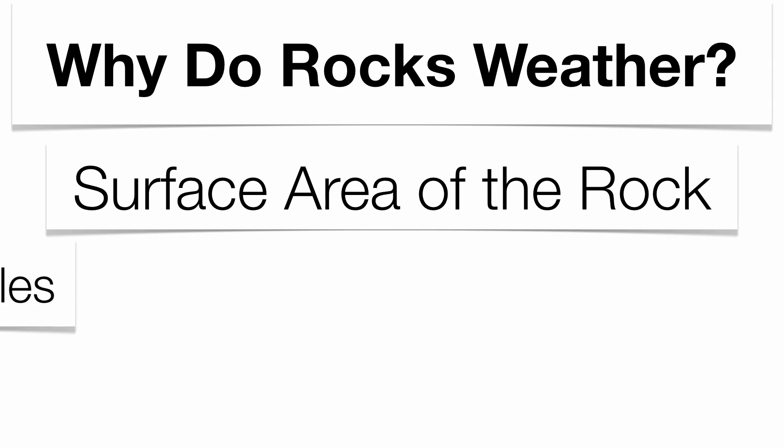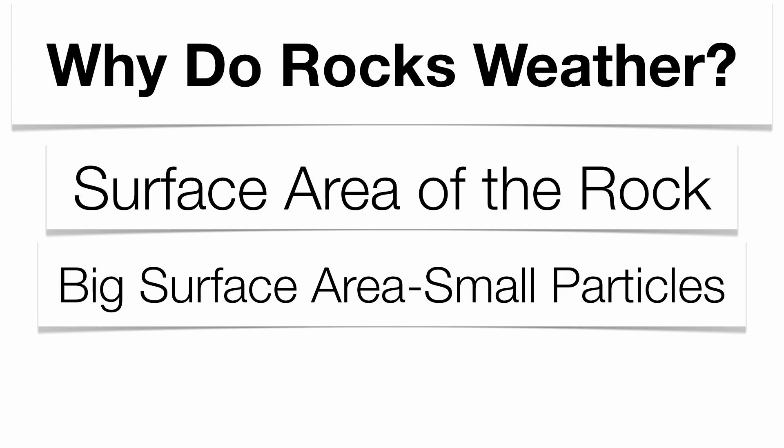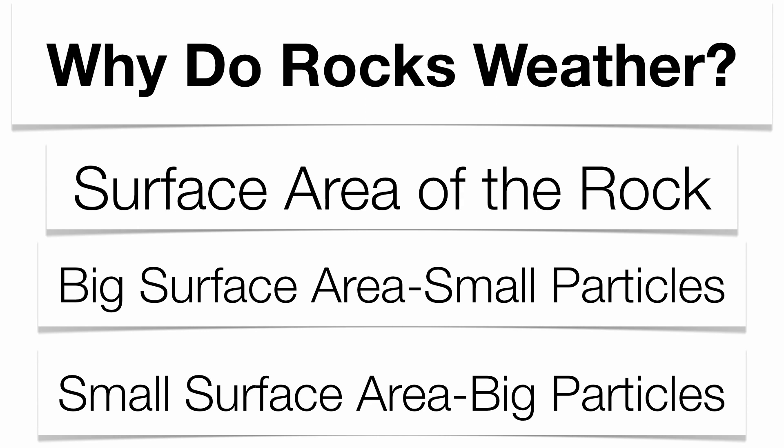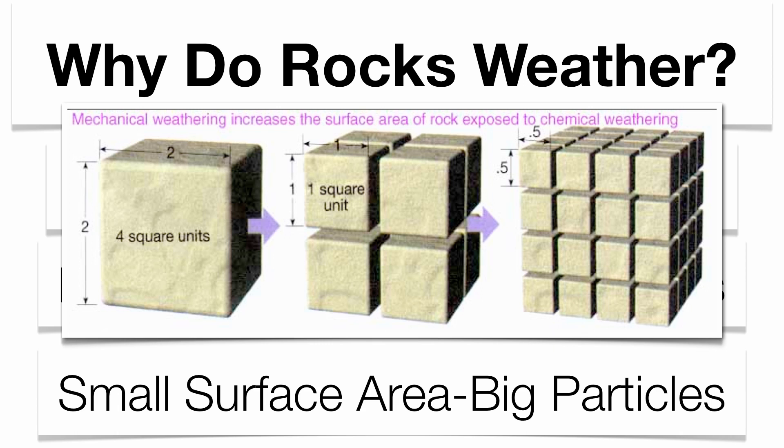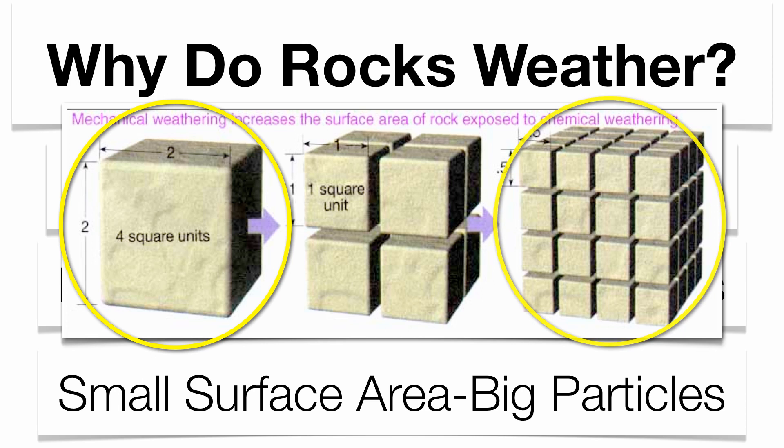The reason why rocks go through weathering is all about the surface area of the rock. When you compare equal quantities of rock in terms of mass, the smaller particles have bigger surface area because there are simply more of them. The bigger particles have less surface area. So the smaller particles get attacked more easily by wind and water and break down much quicker. A big single unit has a much smaller surface area than 64 smaller units — smaller particles in large quantities have a bigger surface area.